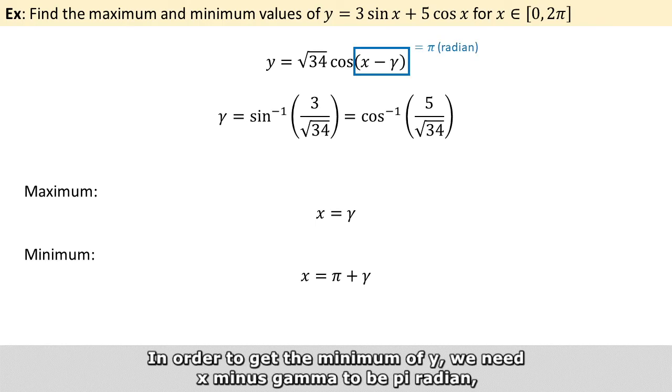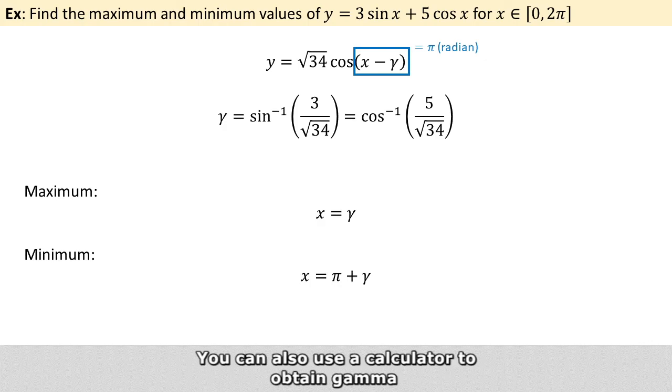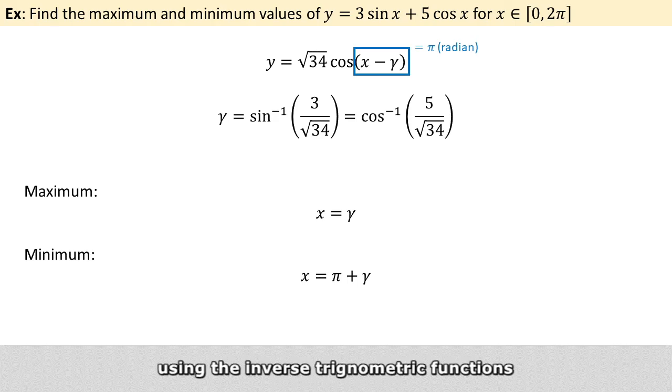And in order to get a minimum of y, we will need x minus gamma to be pi radians, which makes x equals pi plus gamma. We can also use a calculator to obtain gamma using the inverse trigonometric functions, and report the approximation of x.